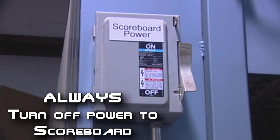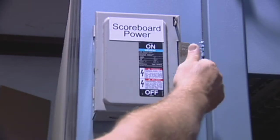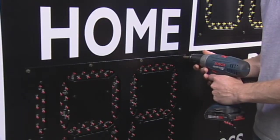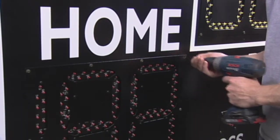Before replacing any parts, turn off the power to the scoreboard. In most cases, the indoor scoreboard module is accessed by first removing the home score digit.